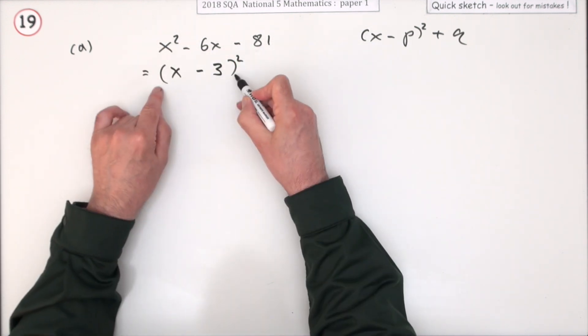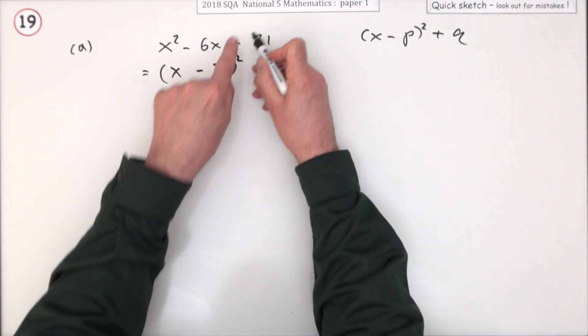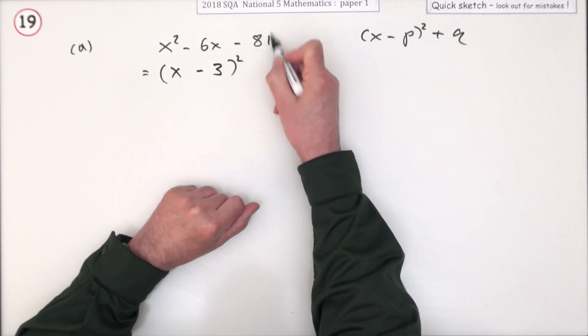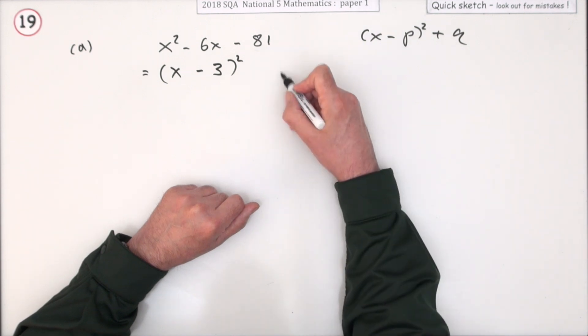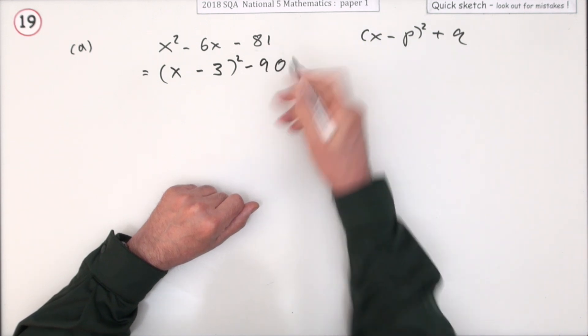Just half that number. Now finishing that off would say that should have been plus 9. But I don't have a plus 9 there. And to take 9 from that. I'd have to subtract 9 from that. Making it minus 90.